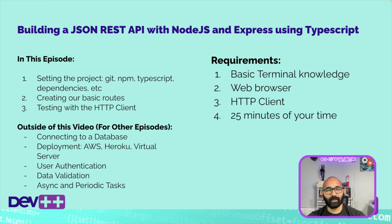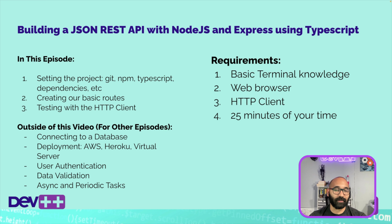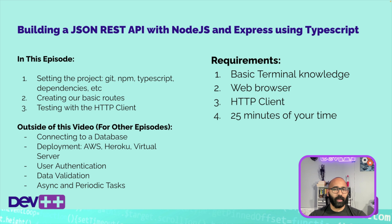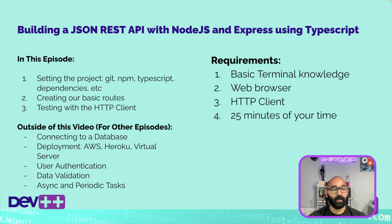In today's episode, we're going to be setting up the project using Git, NPM, and TypeScript with some dependencies. We're going to be using Express, which is a framework for building web applications using Node.js — I'd say the most popular framework for building web applications with JavaScript and TypeScript. Then we're going to be creating some basic routes for creating tasks, updating tasks, and completing tasks. We're going to be testing all that with an HTTP client.